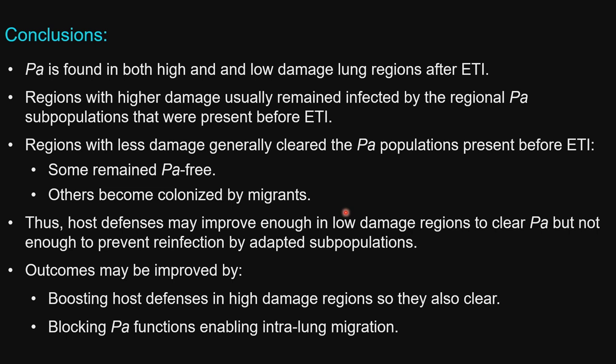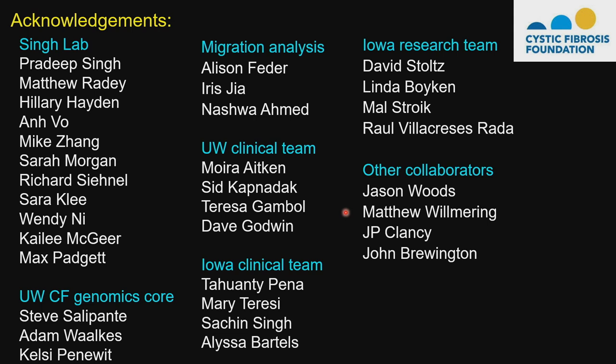In summary: Pseudomonas is found in both high and low damaged lung regions after ETI. Regions with higher damage usually remained infected by the regional Pseudomonas subpopulations present before ETI. In contrast, regions with less damage generally cleared those populations — some remained Pseudomonas-free, others became recolonized by migrants. Host defenses may improve enough in low damage regions to clear initial Pseudomonas but not enough to prevent reinfection by adapted subpopulations. This suggests clinical outcomes may be improved by boosting host defenses in high damage regions or blocking intralung migration functions.